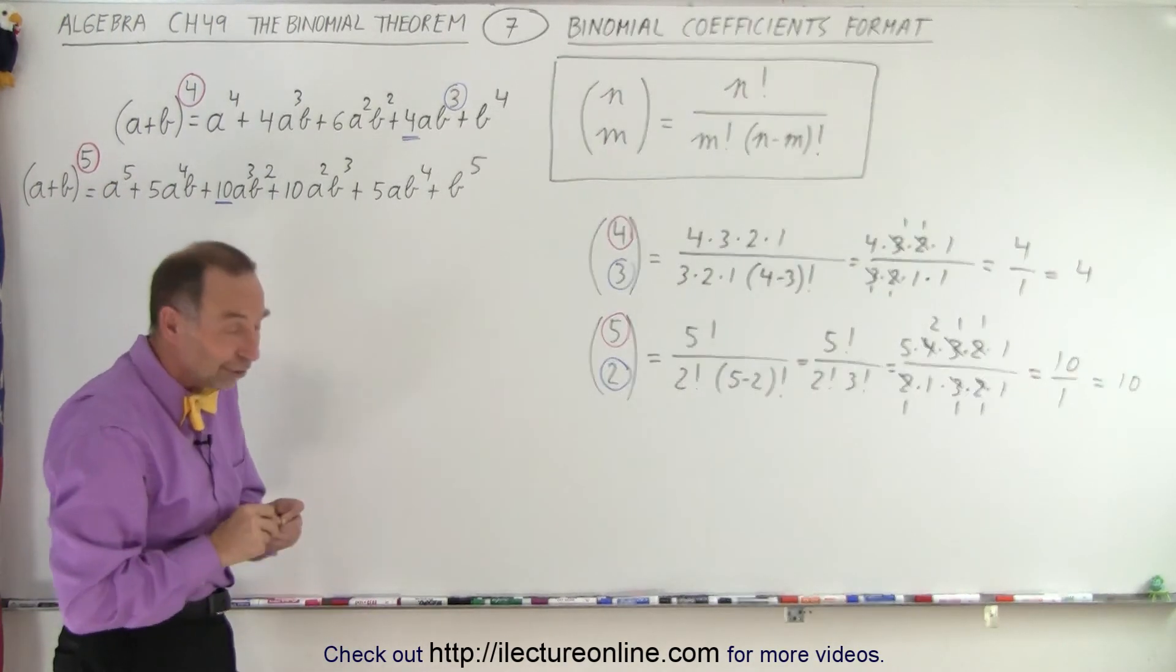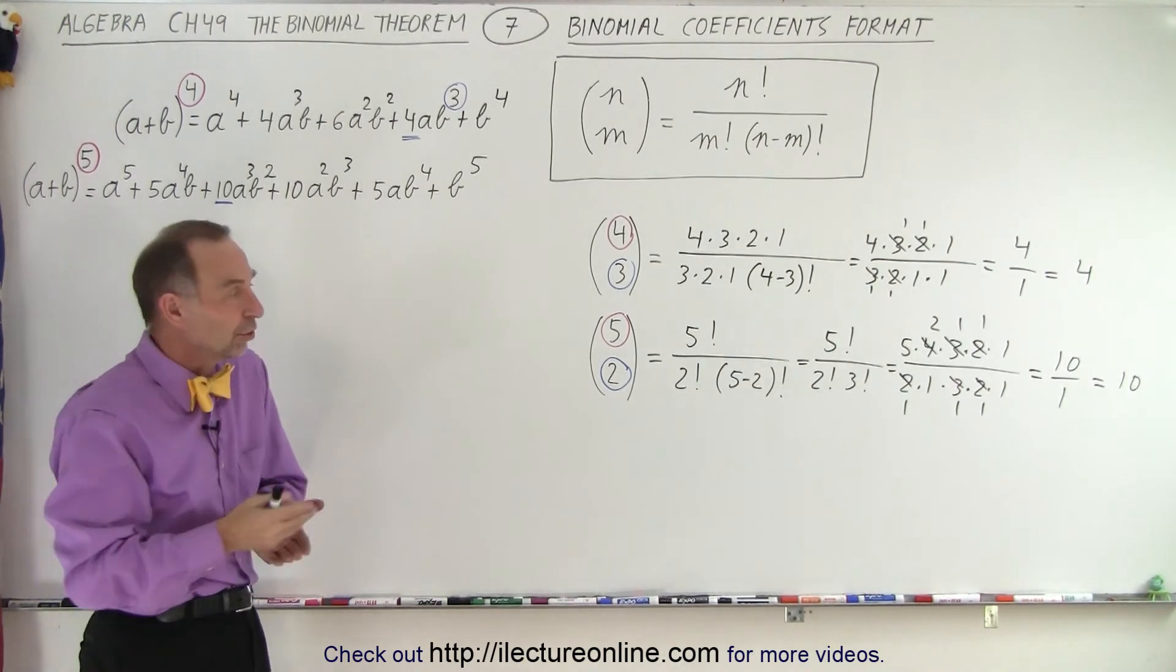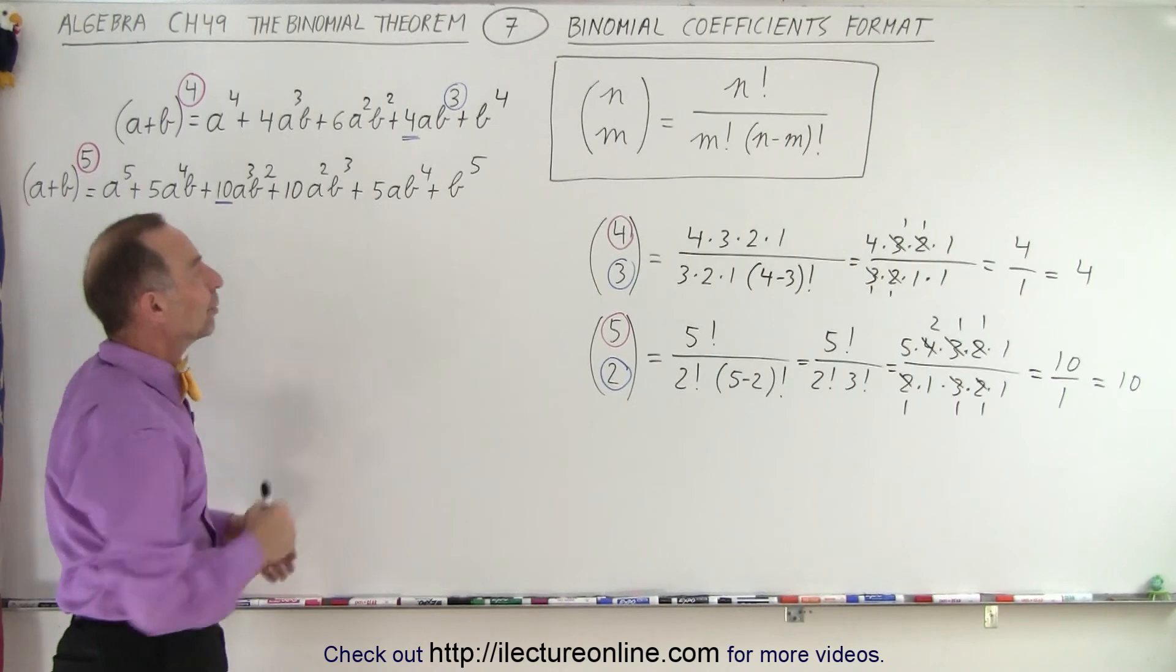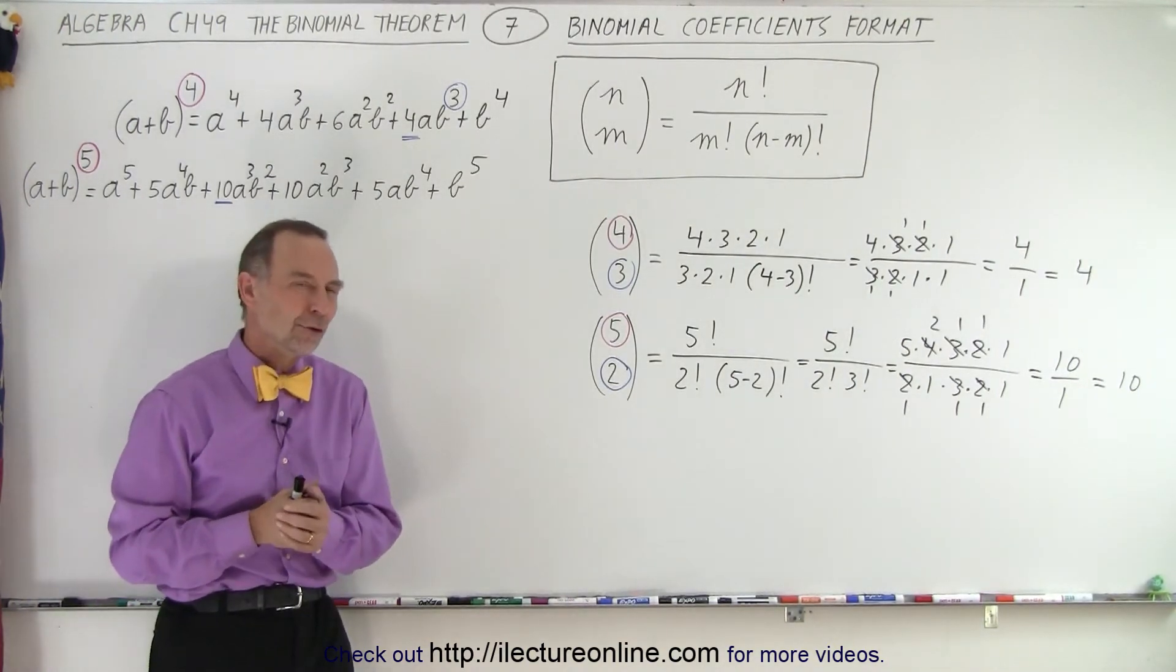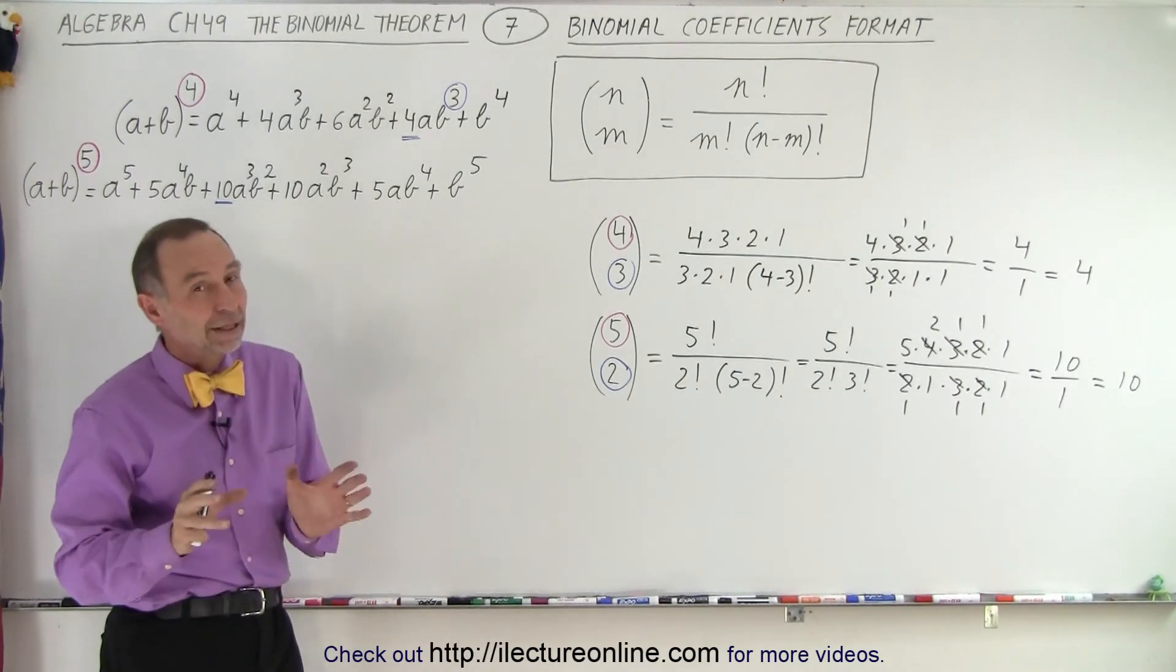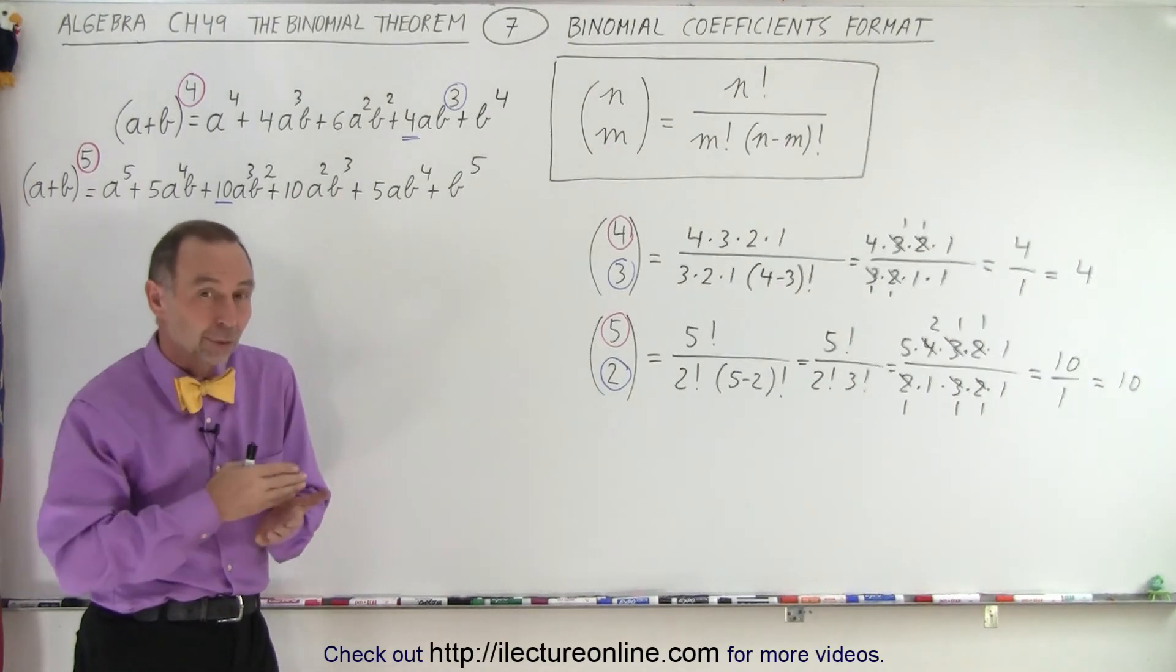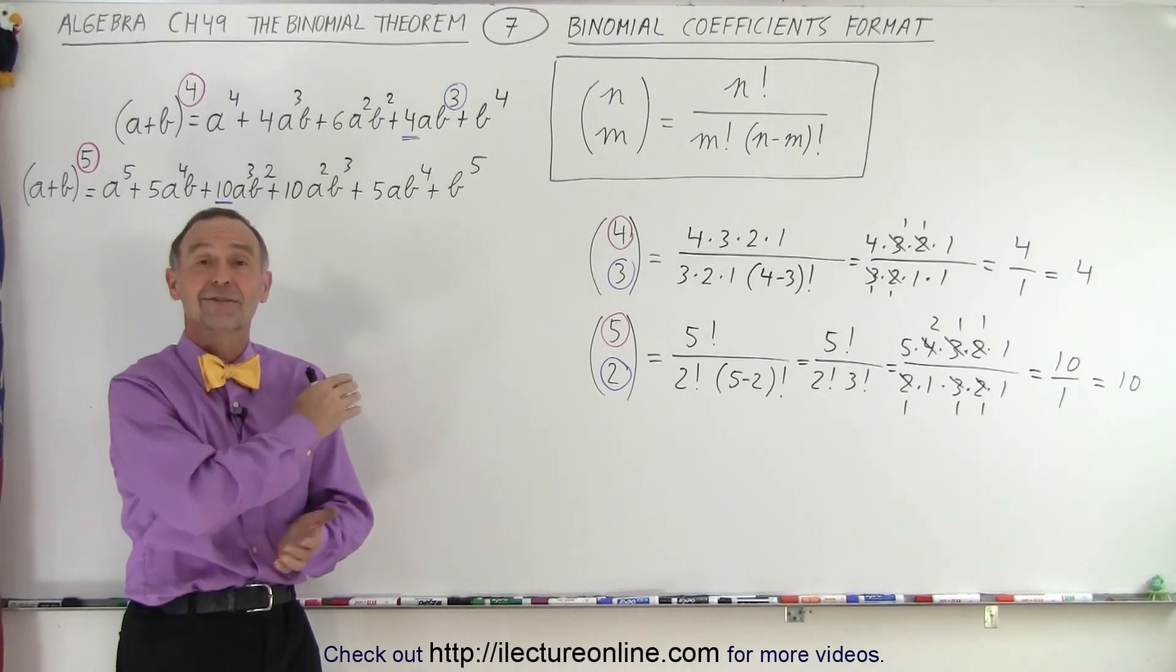This is a very quick method to find any numerical coefficient of any term in a binomial expansion. It can be done quite quickly with numbers like these. When the numbers get bigger, it takes more arithmetic work, but the method remains exactly the same. That's how it's done.